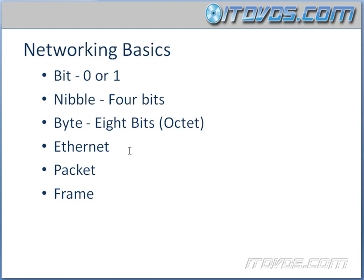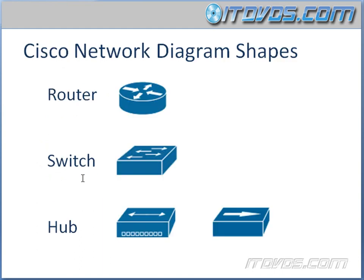Ethernet is a very common protocol used for local area networks. We're also going to hear the terms packet and frame. When we talk about a packet or frame, we're talking about the data as it moves up and down what's called the OSI model — basically referring to the data as it gets passed back and forth over a network.